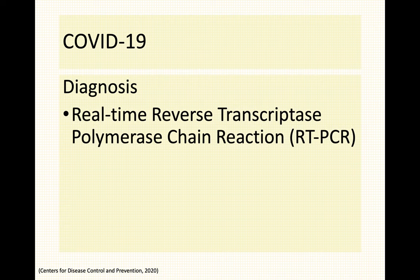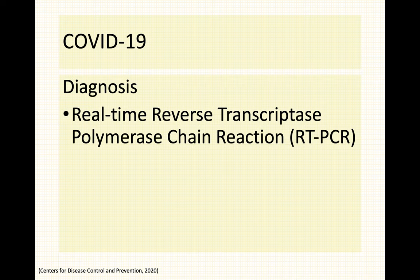How do we diagnose someone infected by SARS coronavirus 2? We use your real-time reverse transcriptase polymerase chain reaction — RT-PCR. What we do here is detect the presence of the genetic material of the virus, specifically the RNA. In your polymerase chain reaction we try to amplify a particular segment of the genetic material of the virus to detect it. Real-time means you are able to get the result with a very short turnaround time.